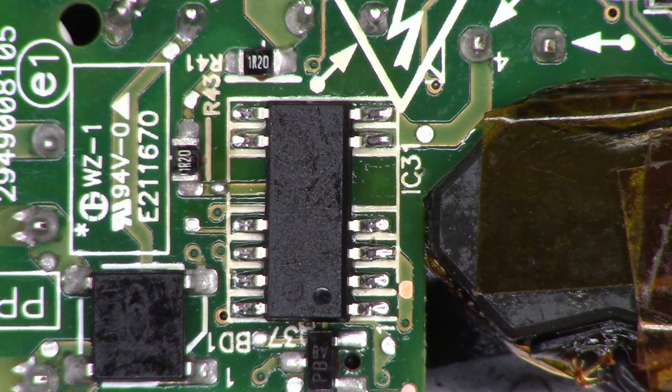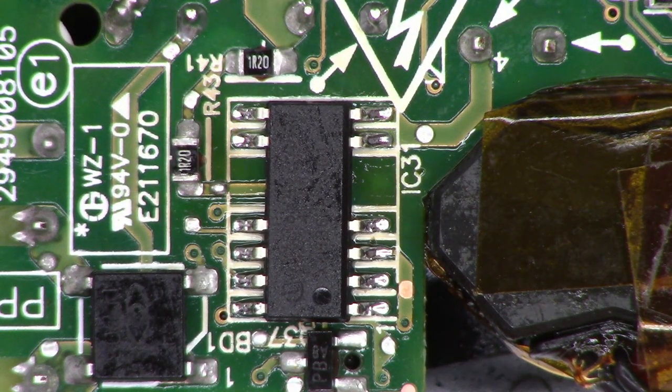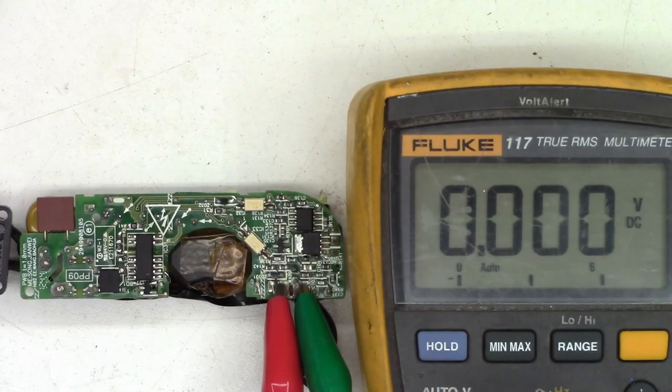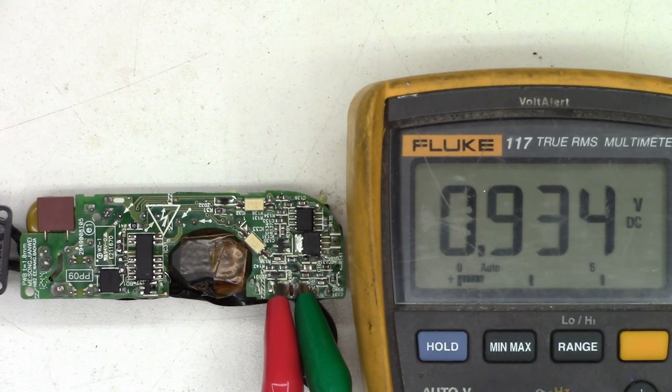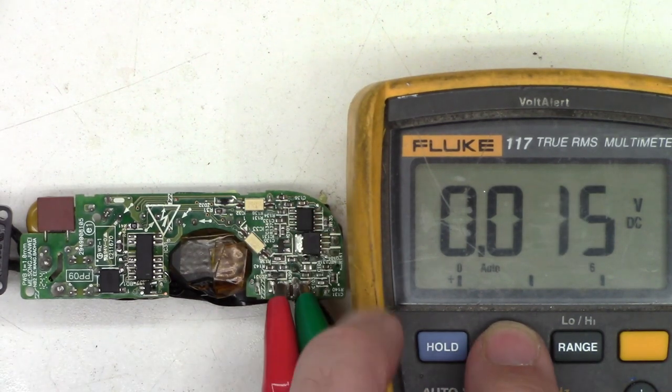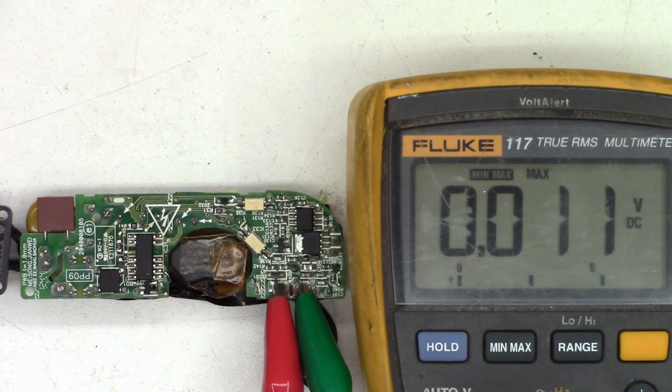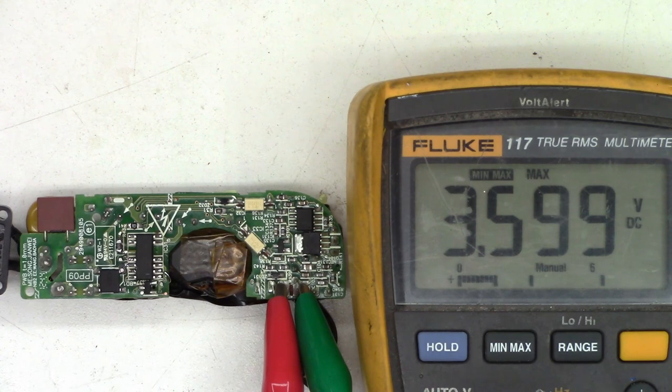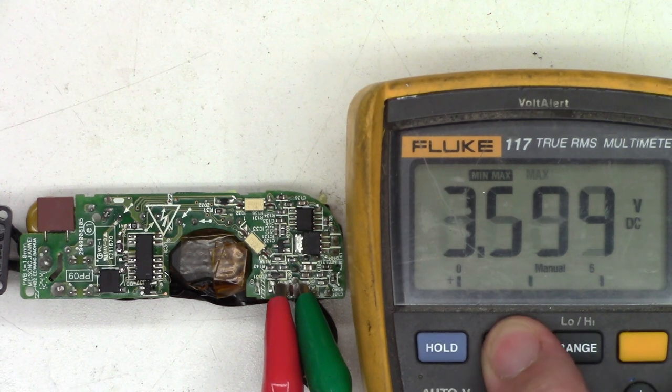That looks really good. New chip is on the board. Let's give it a power up. I see it come up and then go down. Let's put on MinMax so we'll look at the maximum voltage produced. 3.599. I don't understand what's going on with this thing.